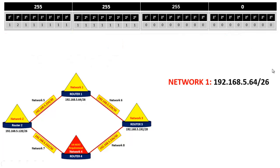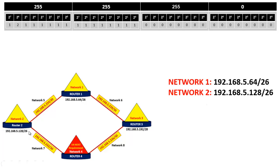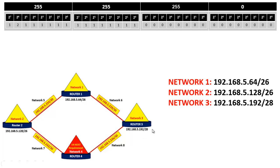So 64 plus 64 is equal to 128. This is because 64 IP addresses are available on network number 1, so 64 plus 64 equals 128. For this reason the next IP address is 192.168.5.128. You can notice that even for network number 2 the CIDR value is /26, meaning even for this network there are only 64 IP addresses available. So again 128 plus 64 equals 192, and the IP address of network number 3 starts from 192.168.5.192 with CIDR value /28.